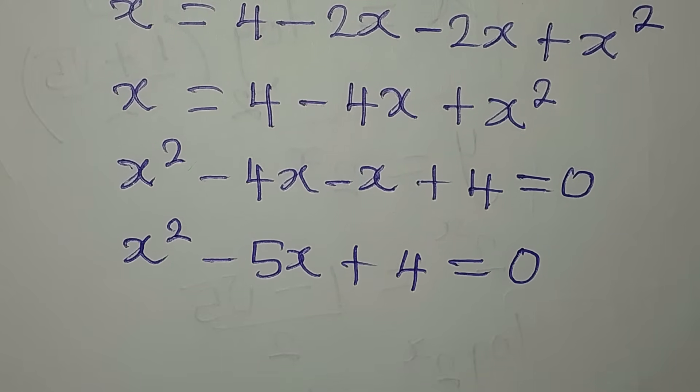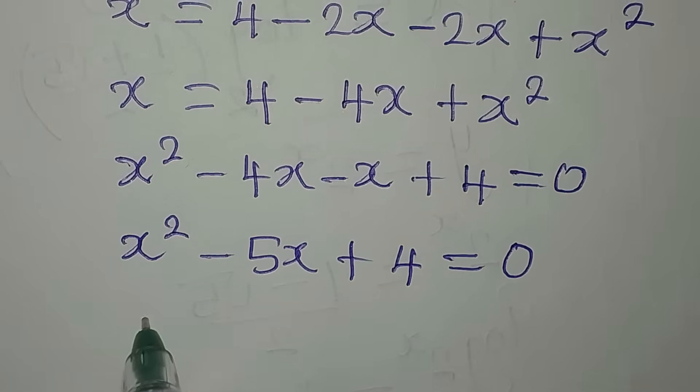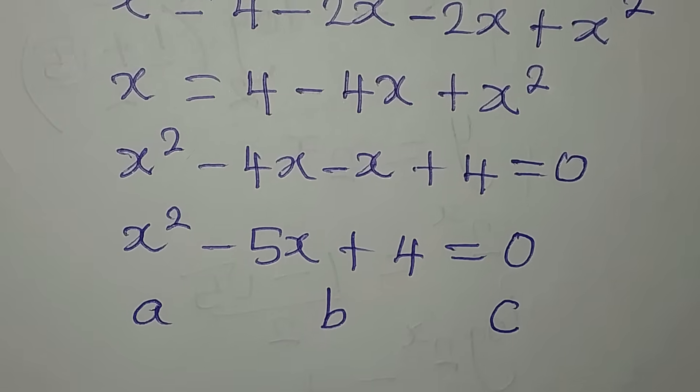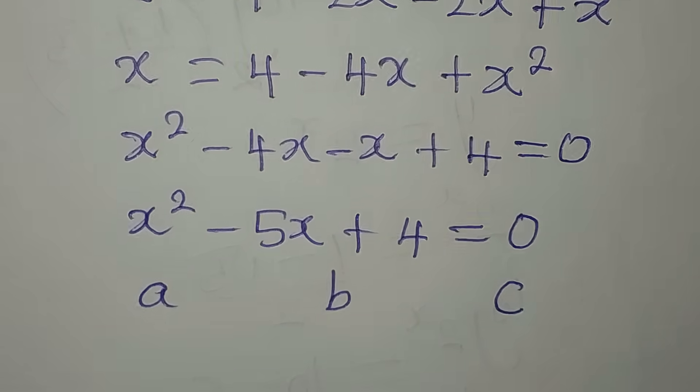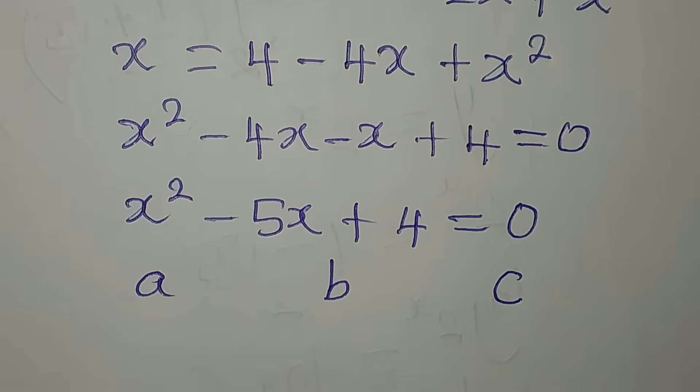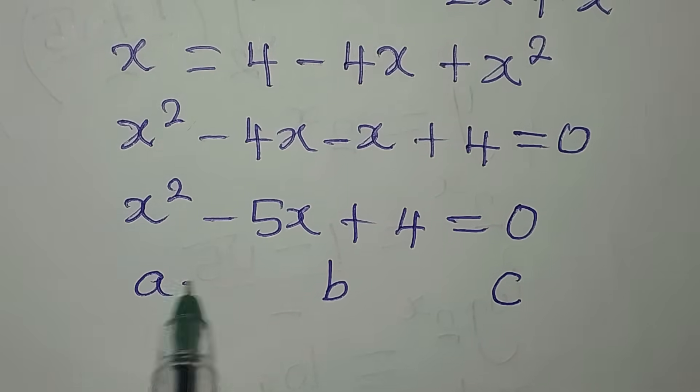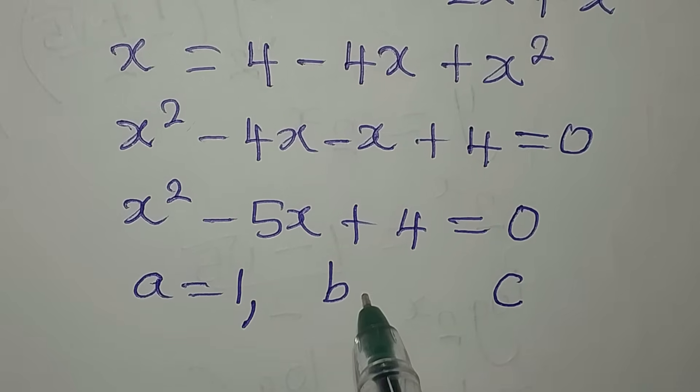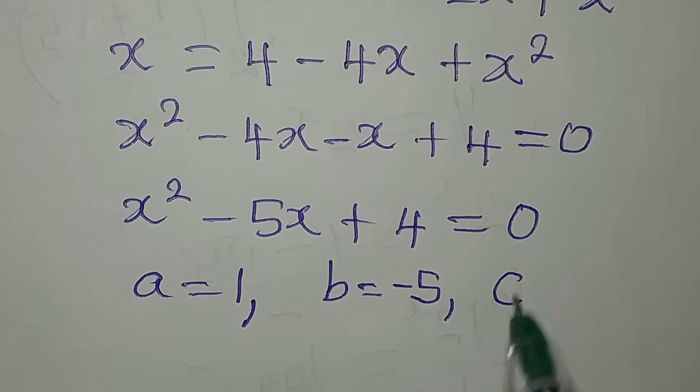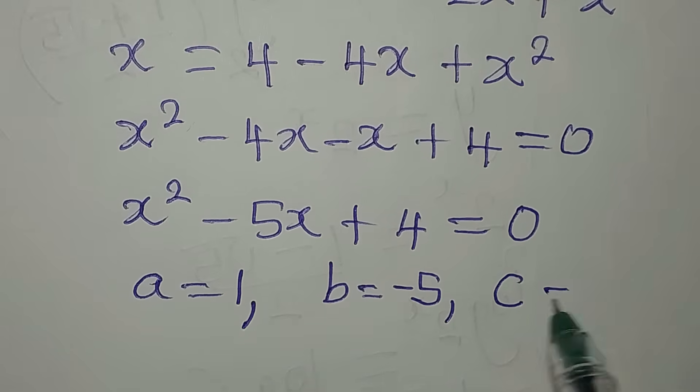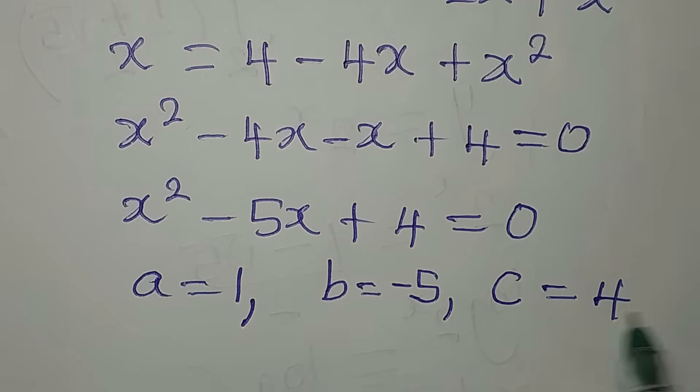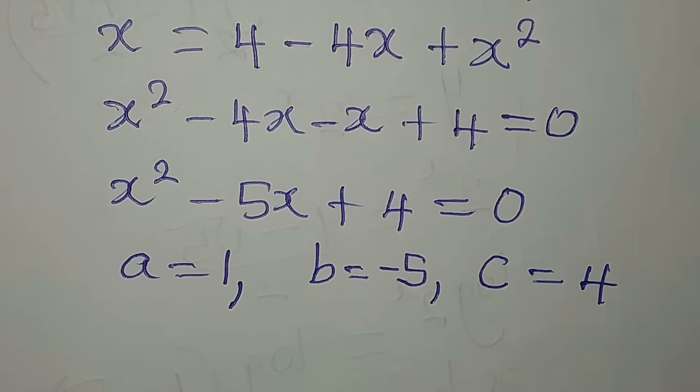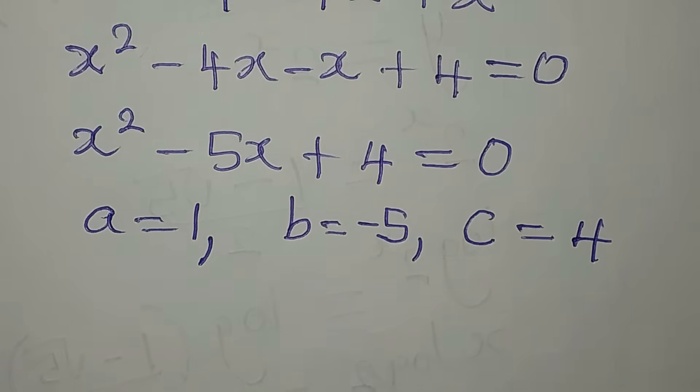If I'm going to do that, then I should have my a, my b, and my c. The reason I always use the formula method is that it works for all quadratic equations. Now our a is 1, that is the coefficient of x squared. b equals minus 5, that is the coefficient of x, and c is the constant which is positive 4.